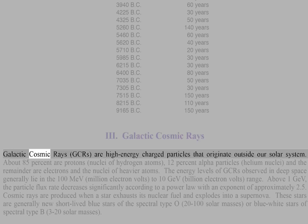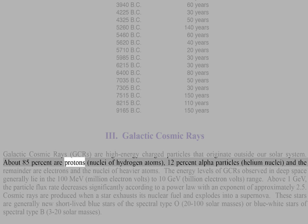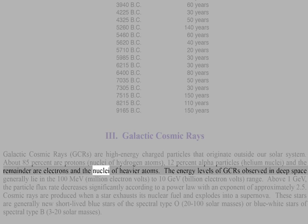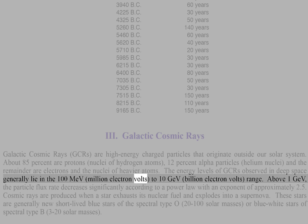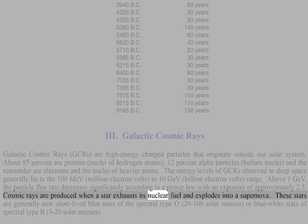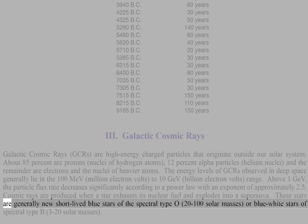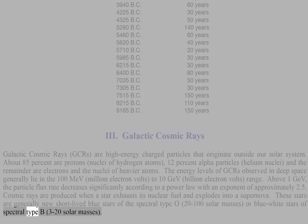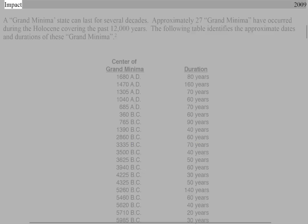Galactic cosmic rays (GCRs) are high-energy charged particles that originate outside our solar system. About 85% are protons (nuclei of hydrogen atoms), 12% alpha particles (helium nuclei), and the remainder are electrons and the nuclei of heavier atoms. The energy levels of GCRs generally lie in the 100 MeV (million electron volts) to 10 GeV (billion electron volts) range. Above 1 GeV, the particle flux rate decreases significantly according to a power law with an exponent of approximately 2.5. Cosmic rays are produced when a star exhausts its nuclear fuel and explodes into a supernova.